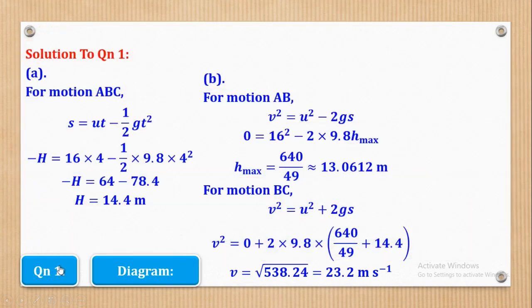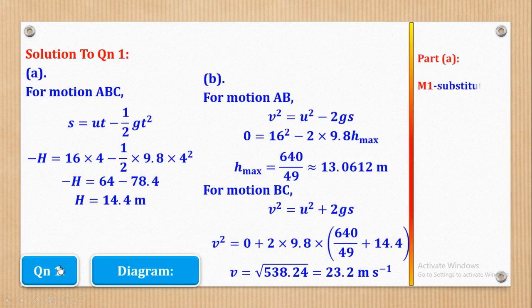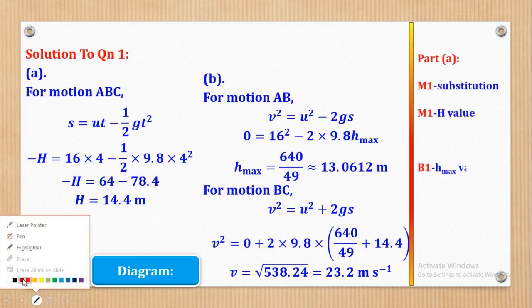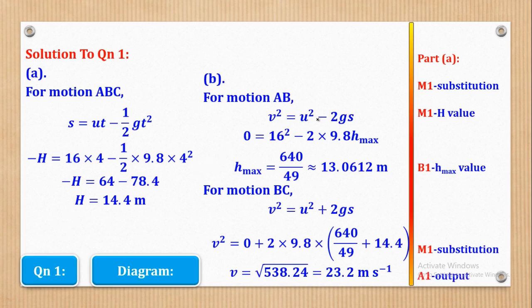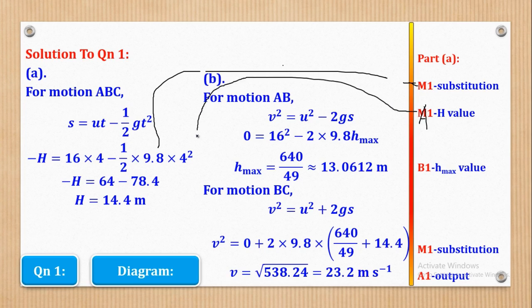Let's see how marks can be awarded. For part A, M1 is for substitution into the second equation of motion, and A1 is for the value of H. For part B, B1 is for getting H max, M1 is for substituting in the third equation, and A1 is for the final output — giving 5 marks total.